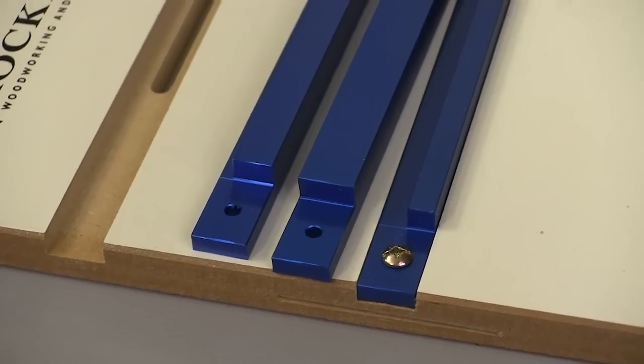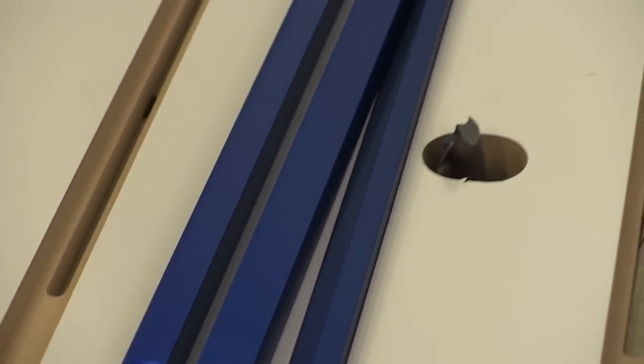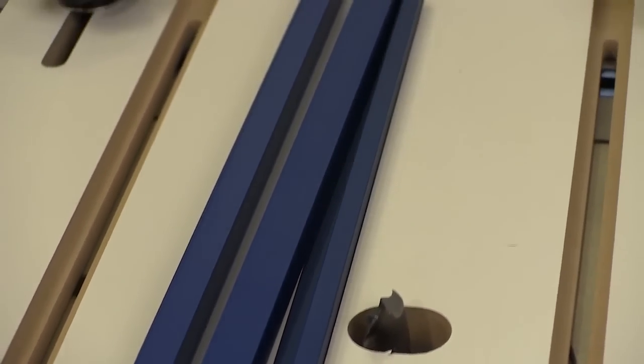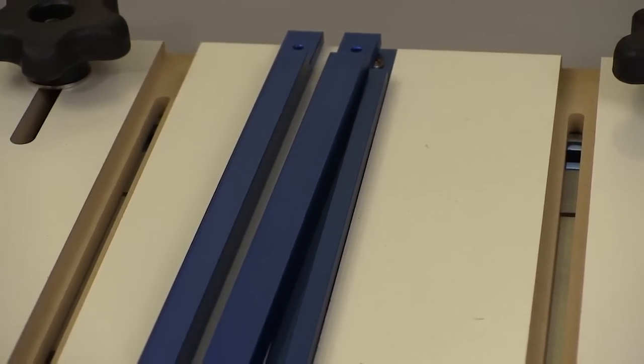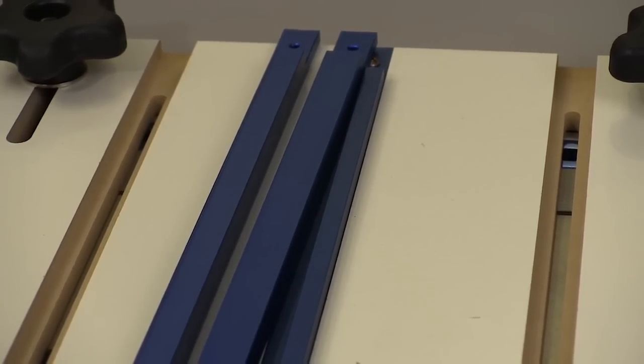An important feature of this jig are the aluminum keys that come in quarter inch, three eighth and half inch widths. These keys are very consistent in width and that's important because we don't want any binding during the cuts.